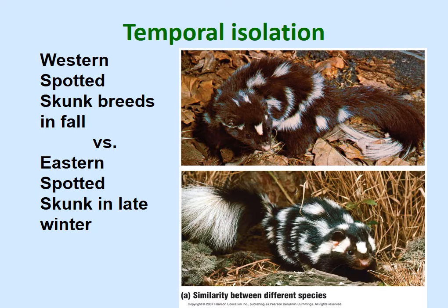We have western spotted skunks and eastern spotted skunks — a species that occurs west of the Mississippi versus one east of the Mississippi. They are basically temporally isolated: the western spotted skunk breeds in the fall, but the eastern breeds in late wintertime. Very similar — both obviously members of family Mustelidae, and they're both skunks — but they're isolated time-wise. Given time and isolation from each other, they evolved into different species. Still very similar, but different.